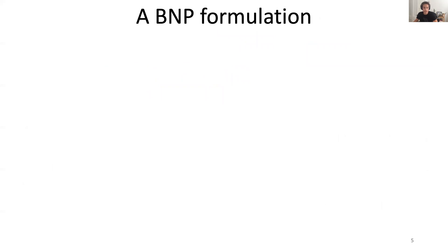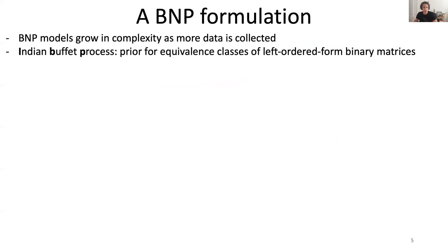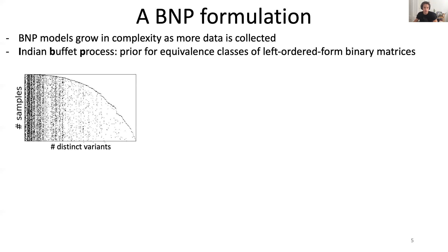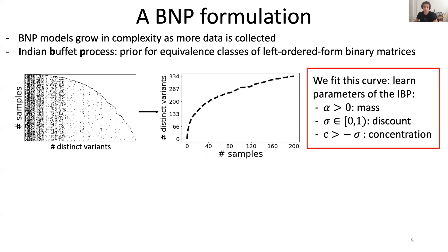To address these questions, we adopt a Bayesian nonparametric approach. Bayesian nonparametric models are known to grow in complexity as more data is collected, and because we are thinking of variants as features that keep on being uncovered from the population, a BNP model seems like a natural choice. The Indian buffet process, or IBP, is a standard tool within the BNP toolbox — it is indeed a prior for equivalence classes of left-ordered form binary matrices. A sample from the IBP looks like this: on the rows we have the samples, and on the columns the distinct variants in left-ordered form. If we count the number of variants as a function of the number of samples, we see that every draw from the IBP induces an ever-increasing number of variants. Our approach will be to fit this curve by learning the three scalar parameters of the IBP that control the shape of this curve.